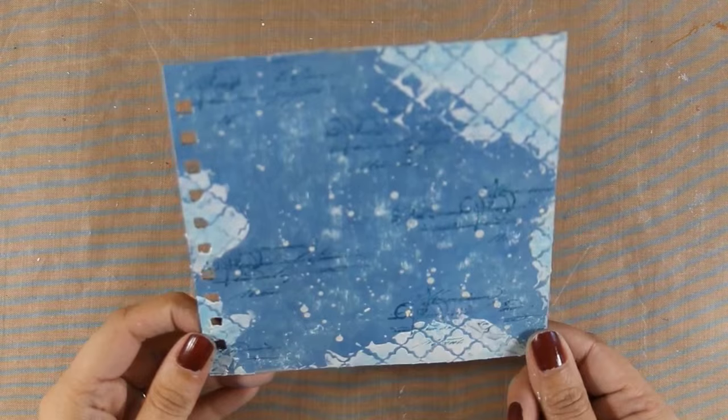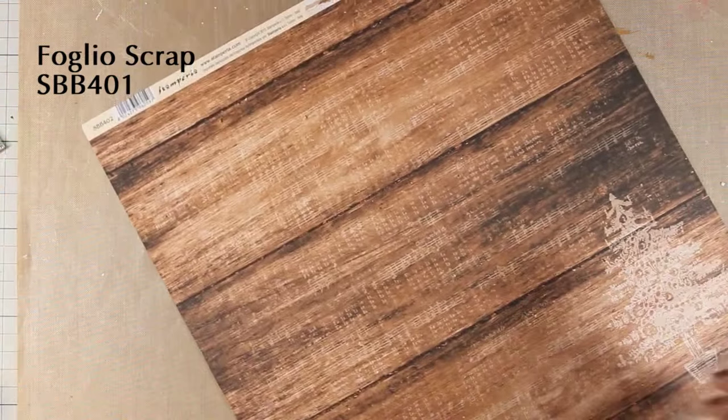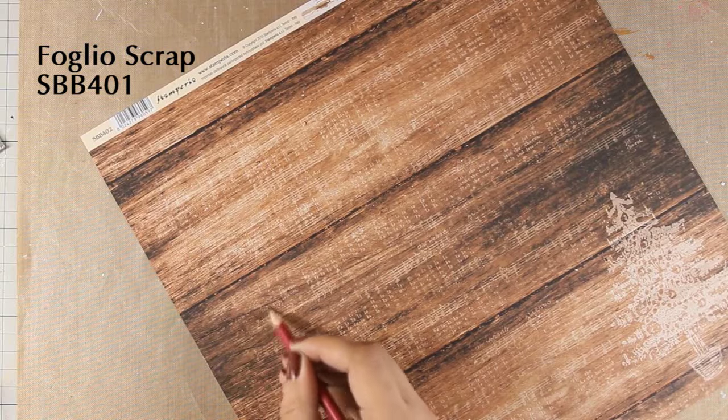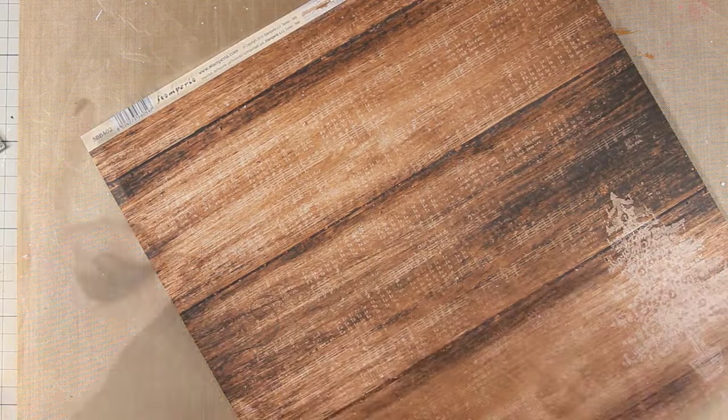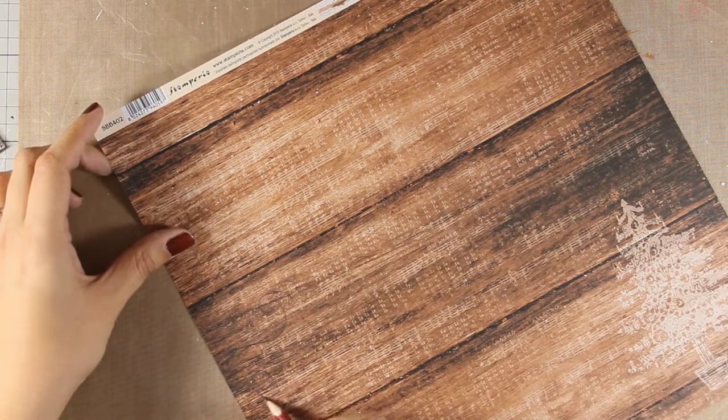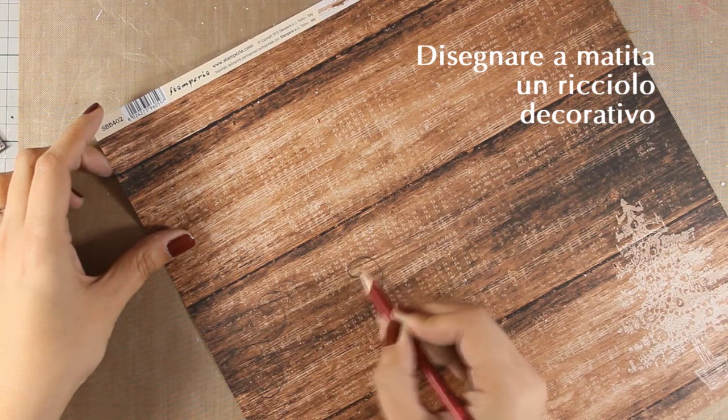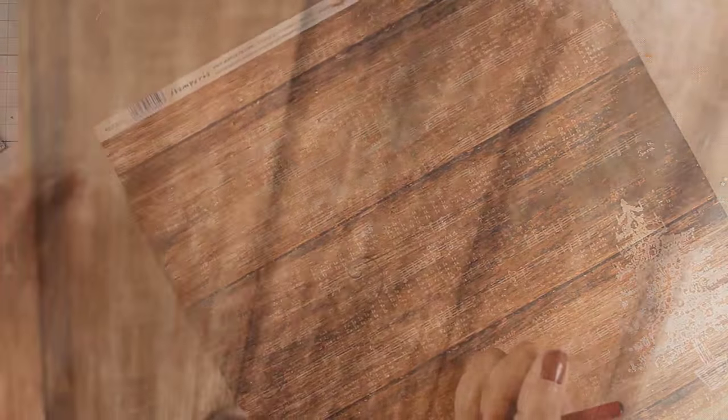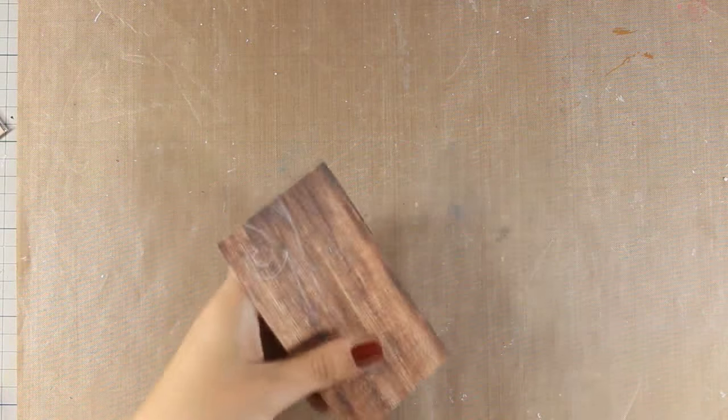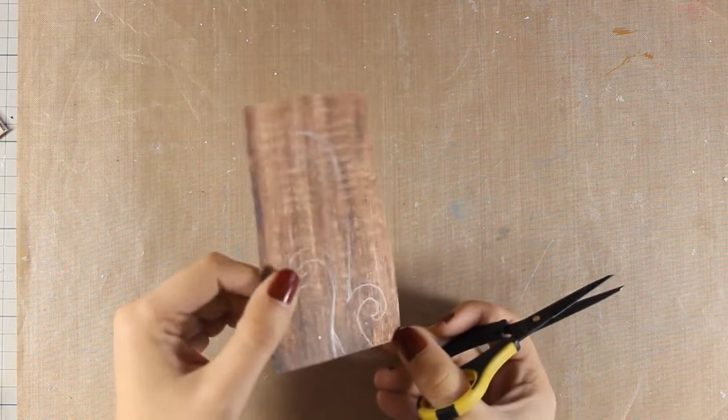And now I can go ahead and create my focal points. I am going to use this Stamperia pattern paper that has a nice wood grain pattern and I am just drawing with my pencil a very whimsical branch. After making sure that I am happy with what I have drawn, I am going to use my scissors and cut it out. Once I have that branch I am going to stick it down on my layout by using my mixed media glue.